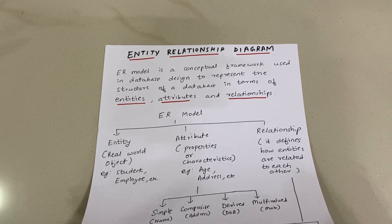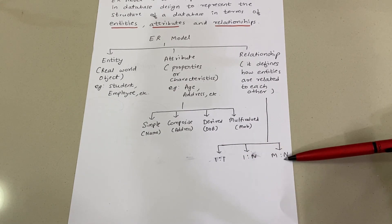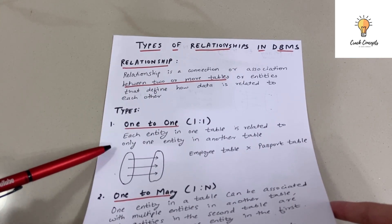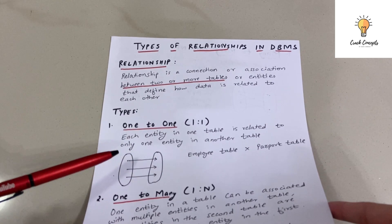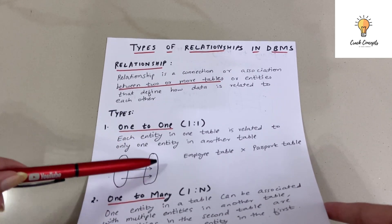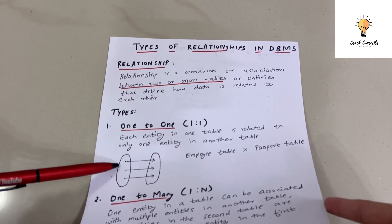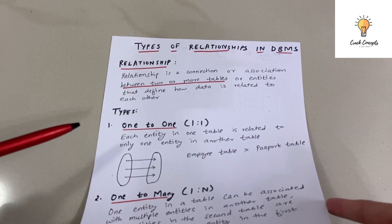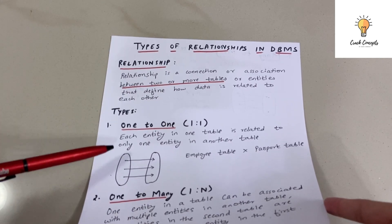Relationships define how different entities are related to each other. There are three types of relationships: one-to-one, one-to-many, and many-to-many. In a one-to-one relationship, each entity in one table is related to only one entity in the other table. For example, each employee can have only one passport, so the employee table and passport table have a one-to-one relationship.